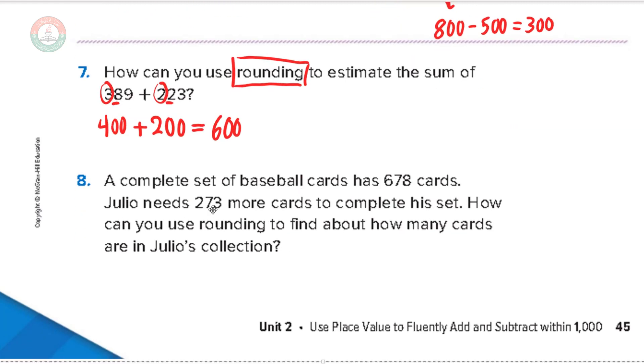Number 8, a complete set of baseball cards has 678 cards. Julio needs 273 more cards to complete his set. How can you use rounding to find about how many cards are in Julio's collection? So, Julio needs 273 more cards to complete his set. It means what he has is less than 678 by 273. So if I need what he has, I must subtract.